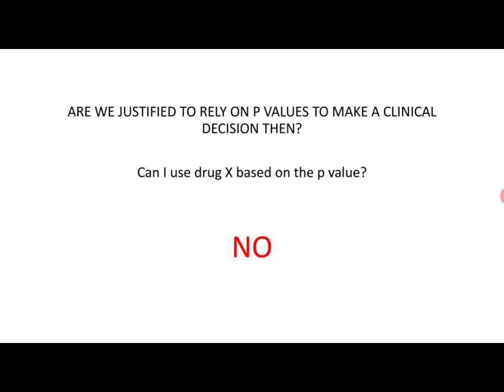If that is the case, are we justified in relying on p-values to make a clinical decision? Can I use drug X based only on the p-value of 0.04? The answer is an emphatic no — I cannot rely only on p-values. The p-value does not help me reach that decision. The p-value is the most commonly reported statistical value in the EBM literature, but if I can't use it, then what do I do? Can statistics help me with the range of uncertainty?